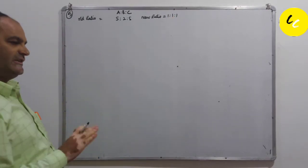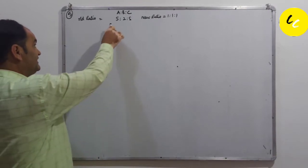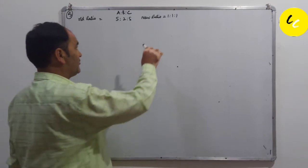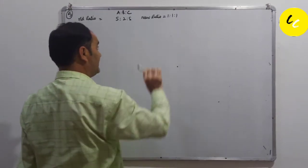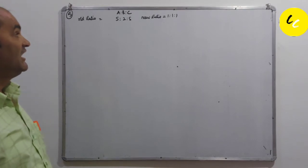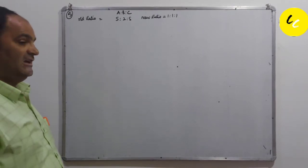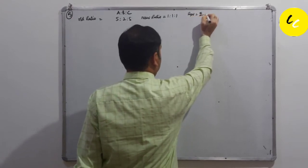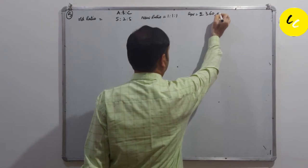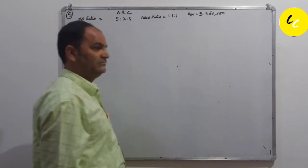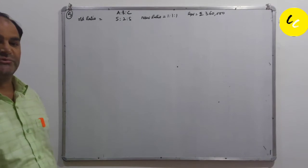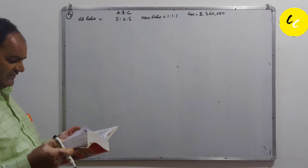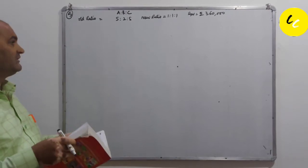First, the profit sharing ratio of A, B, and C is 5:2:5, and they decided to share the profits in future equally, that is their profit sharing ratio is 1:1:1. Goodwill is valued at Rs. 3 lakh 60 thousand. We have to give the journal entry.